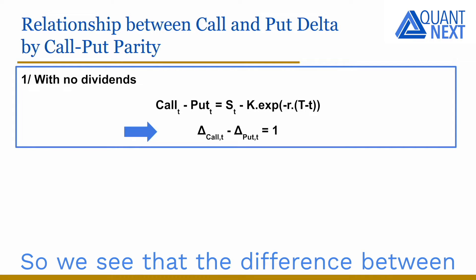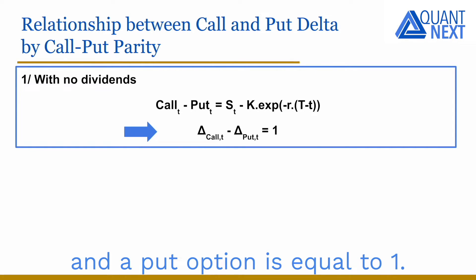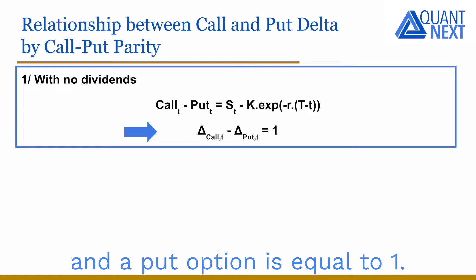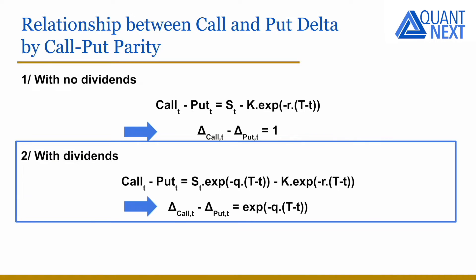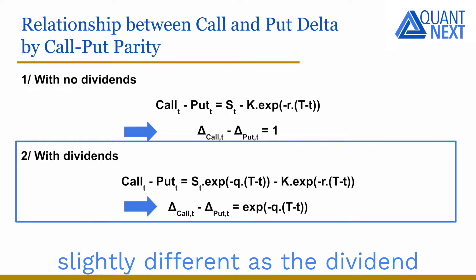So we see that the difference between the delta of a call option and a put option is equal to 1. With dividends, the relationship is slightly different as the dividend yield Q intervenes in the formula.